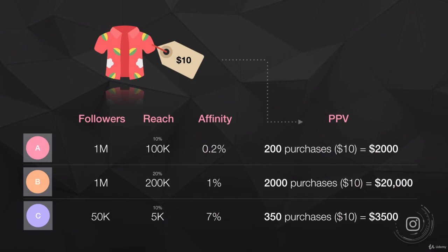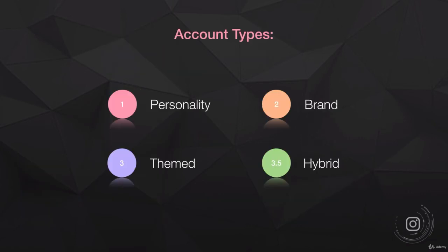The third account is a really good example, especially for beginners. You don't actually need that many followers if you've got high reach and high affinity. Account C has only fifty thousand followers and reaches 10% — just five thousand people see the post. But if you've worked hard on affinity through building a hybrid account, you can get it up to around seven percent. That gives 350 purchases and thirty-five hundred dollars — outperforming the account with a million followers.